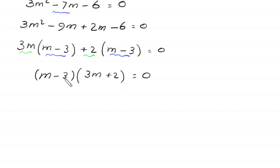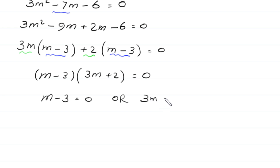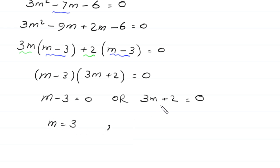Now, from here, either this expression m minus 3 is equal to 0, or this expression 3 times m plus 2 is equal to 0. From the first equation, m is equal to 3. From the second equation, m is equal to negative 2 over 3.